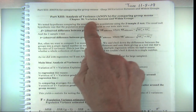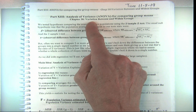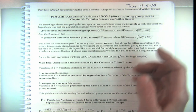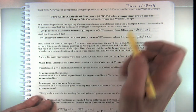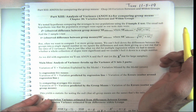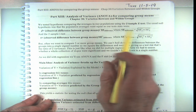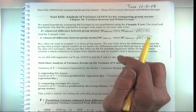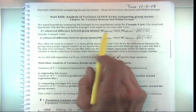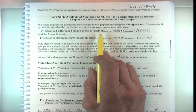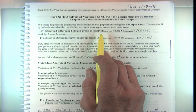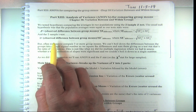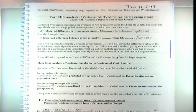We've been doing analysis of variance for regression, and now we're going to look at this special case of analysis of variance for comparing group means. When we compared two means, the null was there's no difference between the groups, and we looked at the observed difference minus the expected, which was zero under the null, over the standard error for the difference. We did that with a z or a t.